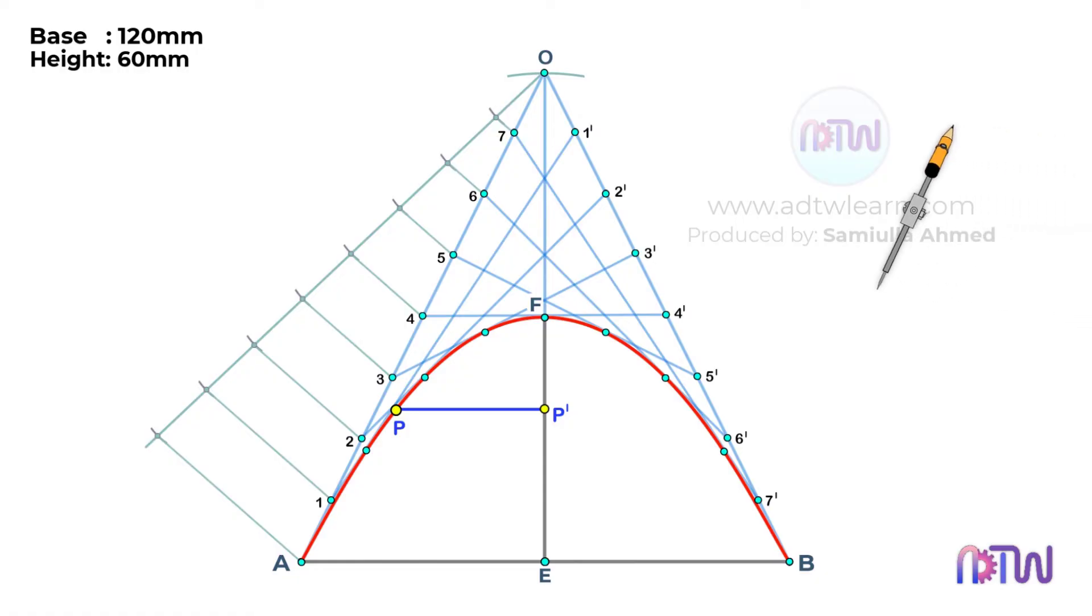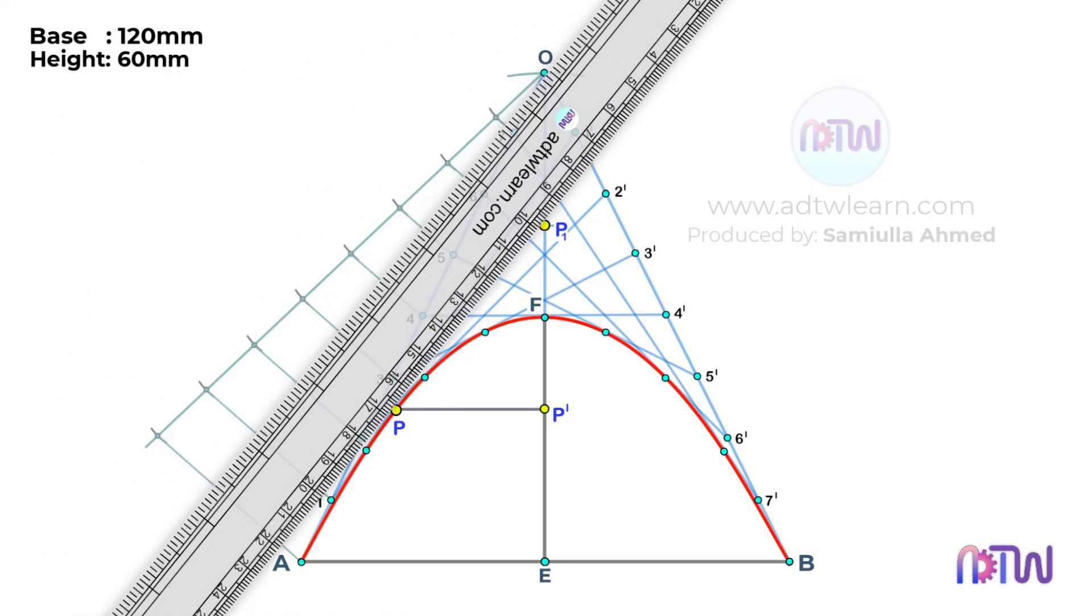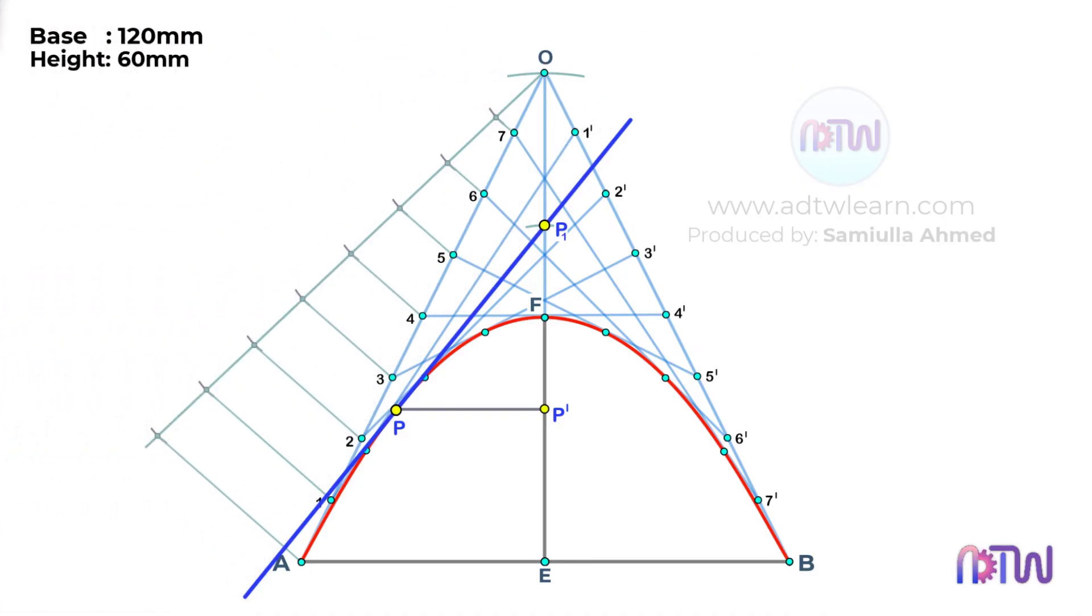After this, take a compass and adjust it to length from P dash to F. Using F as a center, cut an arc on this vertical line as shown. Label this point as P1 and draw a line joining point P and P1. This line will be a tangent to this parabola.